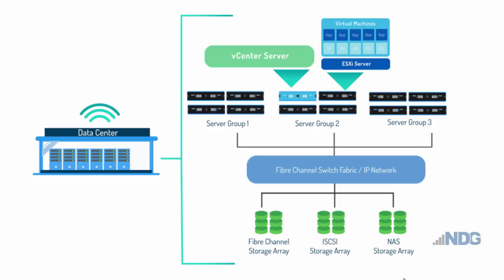In this diagram, we have a data center and it's been virtualized. There are three main components: the vCenter server that manages all of the virtualization servers, the ESXi type 1 bare metal virtualization servers that run the virtual machines or virtual computers, and then we have the storage — network attached storage or storage area network where you can have all of your files and data saved, accessible by any one of these servers over the network.